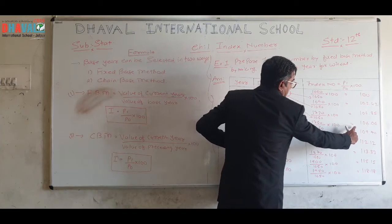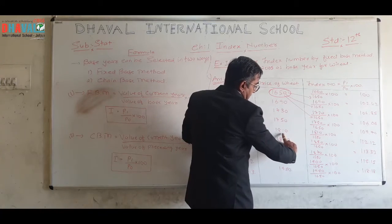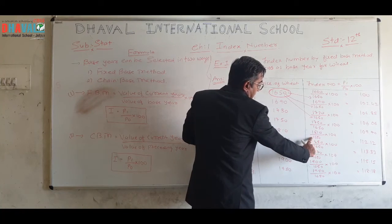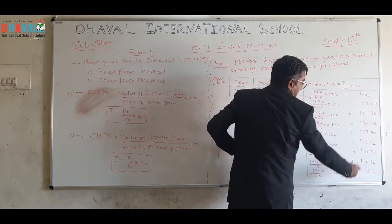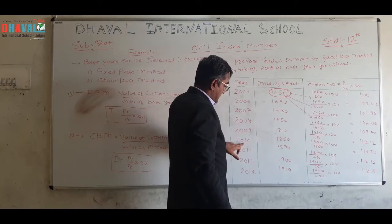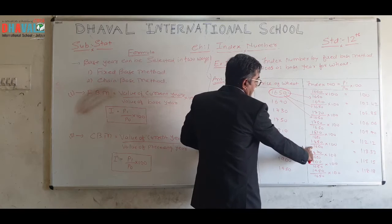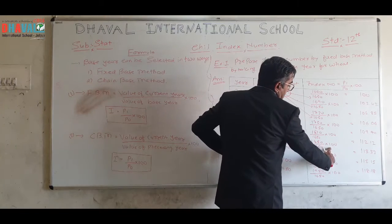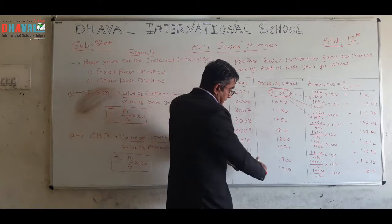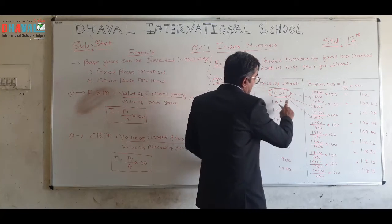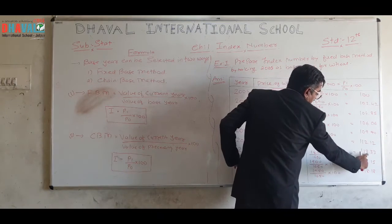For year 2009: price of current year is 1810, divided by price of base year 1650, into 100. Answer: 109.70. For year 2010: price of current year is 1850, divided by price of base year 1650, into 100. Answer: 112.12.